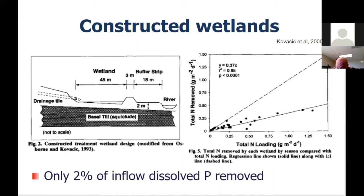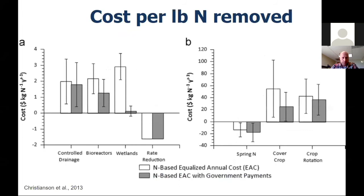In terms of phosphorus, this is more bad news — only 2% of the inflow dissolved phosphorus was removed in these constructed wetland systems. Very ineffective for phosphorus, but effective for nitrogen removal. Wetlands are also expensive and can have a lot of regulatory issues, so they may not be quite as competitive as some of our other end-of-tile BMPs.